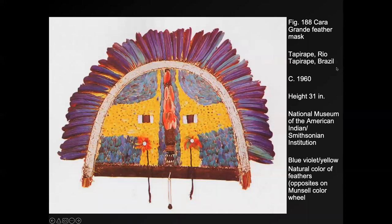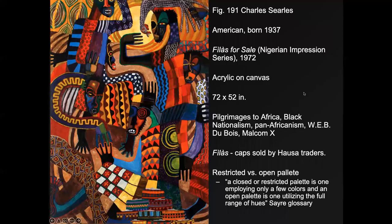Many cultures understood complementary colors a long time ago because they saw it in nature. In the case of this feather mask from a culture in Brazil, they use feathers of a bird that has a blue, violet, orange, and yellow color scheme — and these happen to be opposites on the Munsell color wheel. Perhaps this bird evolved these opposites for camouflage. But when put in a colored mask, it makes everything very intense — it seems to glow.